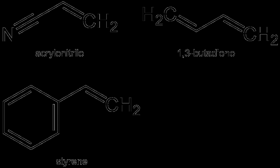Acrylonitrile butadiene styrene, chemical formula C8H8·C4H6·C3H3N, is a common thermoplastic polymer. Its glass transition temperature is approximately 105 degrees Celsius. ABS is amorphous and therefore has no true melting point. ABS is a terpolymer made by polymerizing styrene and acrylonitrile in the presence of polybutadiene. The proportions can vary from 15–35% acrylonitrile, 5–30% butadiene, and 40–60% styrene.